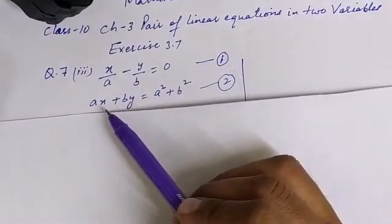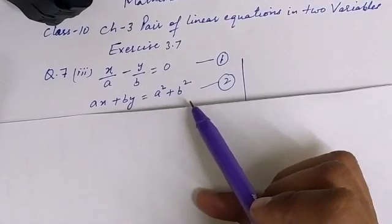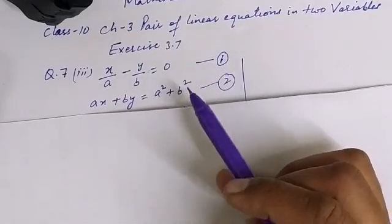This is the first equation, and the second equation is ax plus by is equal to a square plus b square. This is equation number 2. So we have to solve this equation.